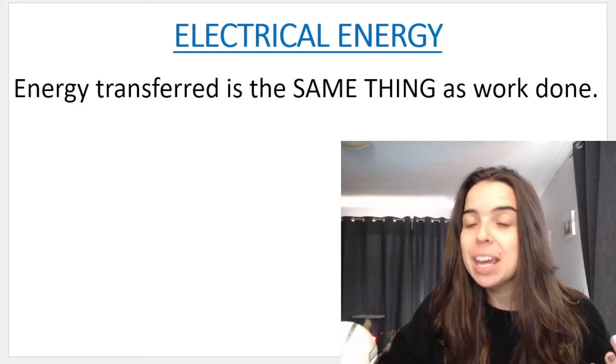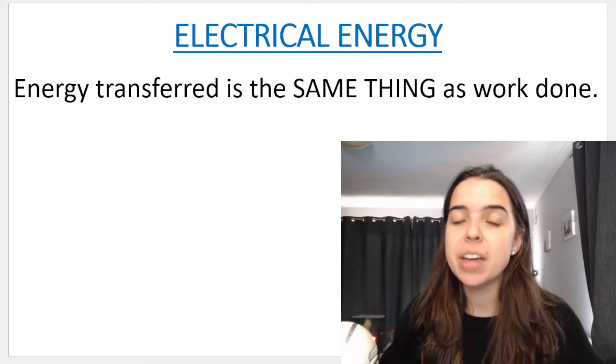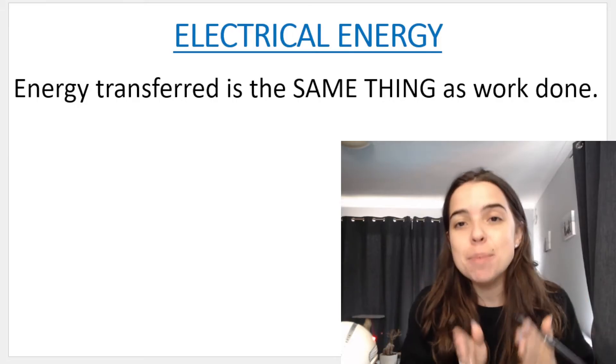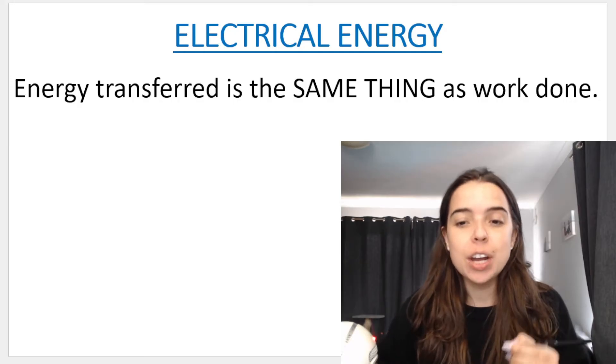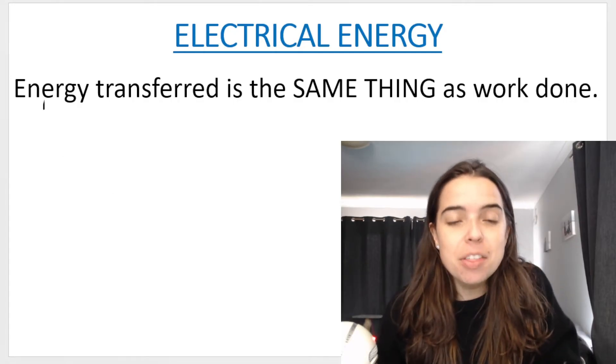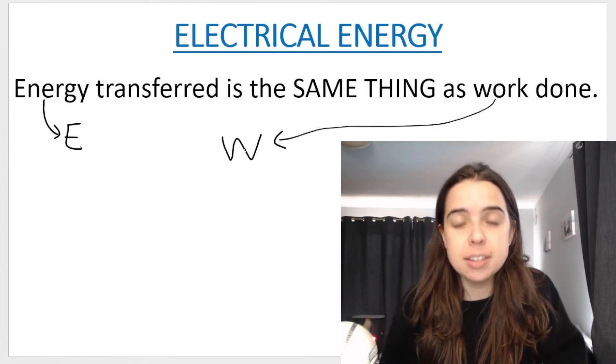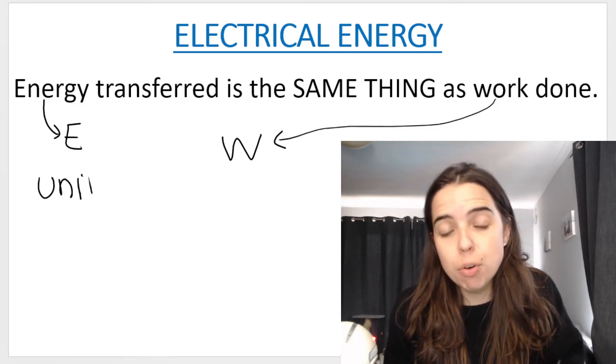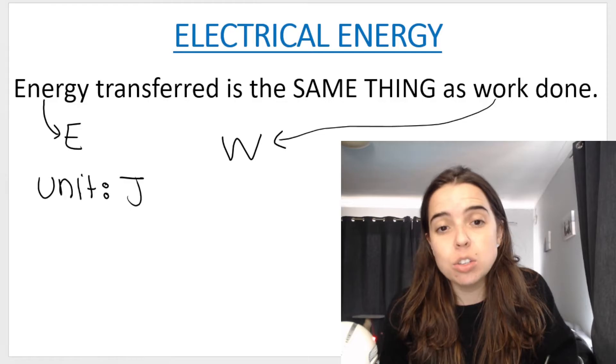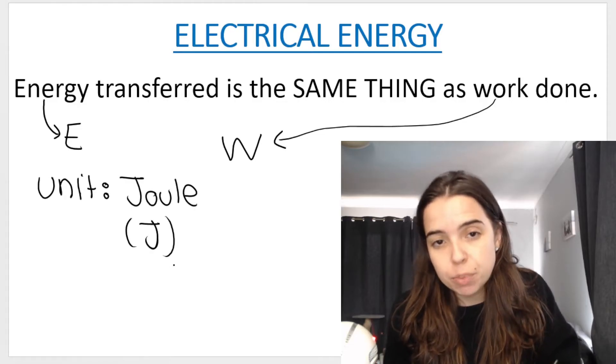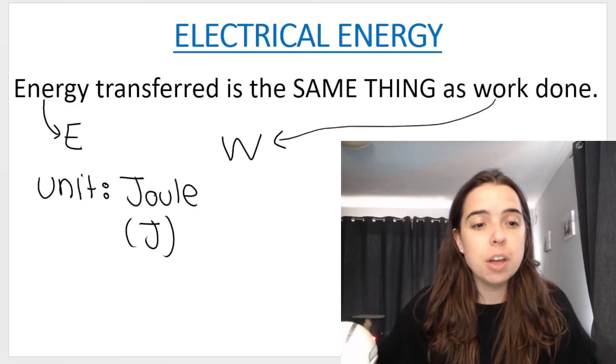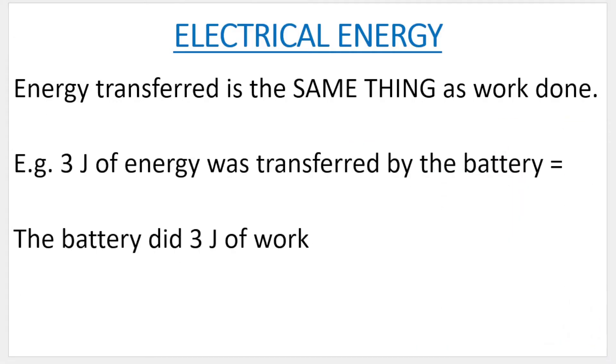Now we've discussed energy before and I just want to emphasize one thing very quickly: that energy transferred is the same thing as work done. The symbol for energy is E. The symbol for work is W. However, the unit for both of these physical quantities is joules. If I had to tell you that three joules of energy was transferred by the battery, it means that the battery did three joules of work. Energy and work, same thing.